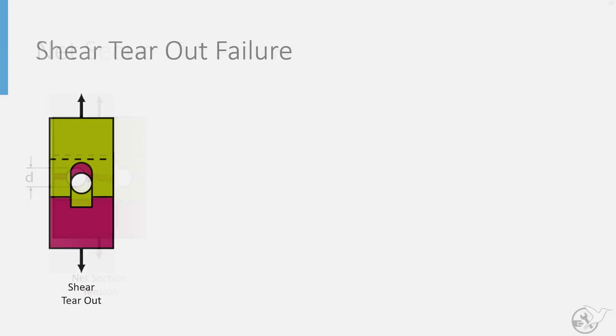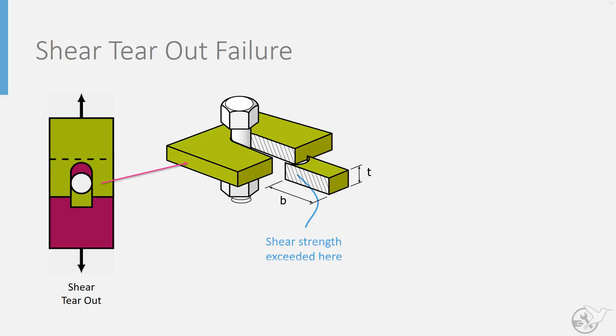If load passes the net section without failure, it has to flow around the fastener, creating a region of high shear on either side of the fastener. If the fastener is too close to the edge of the sheet, the area that can resist this shear load can be small enough that the ultimate shear strength of the sheet material is reached.